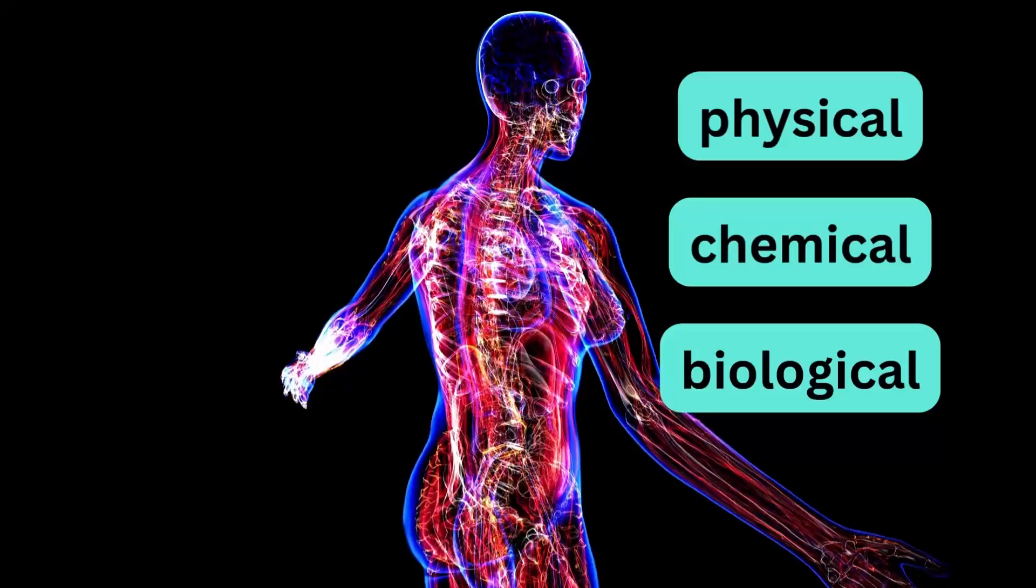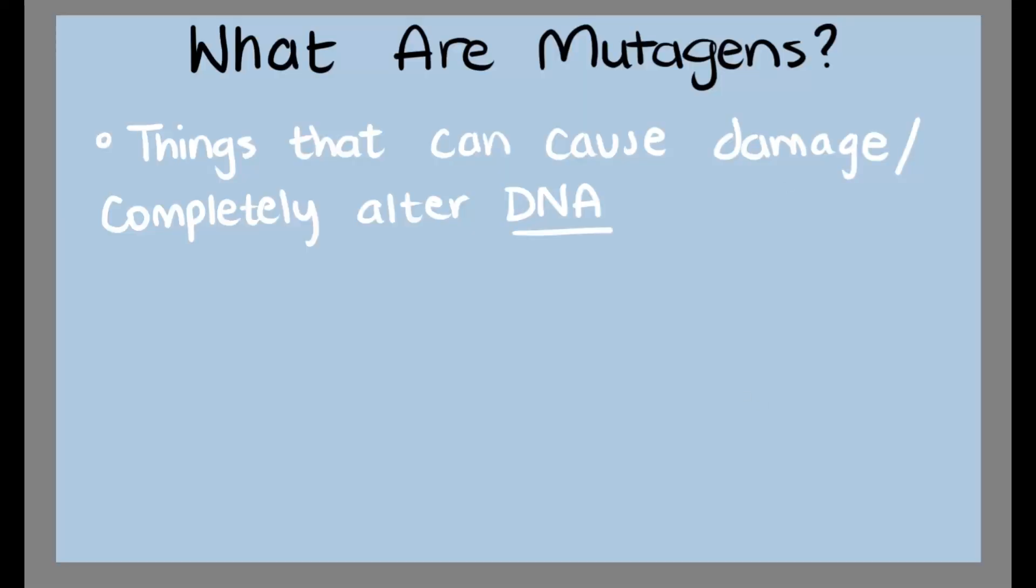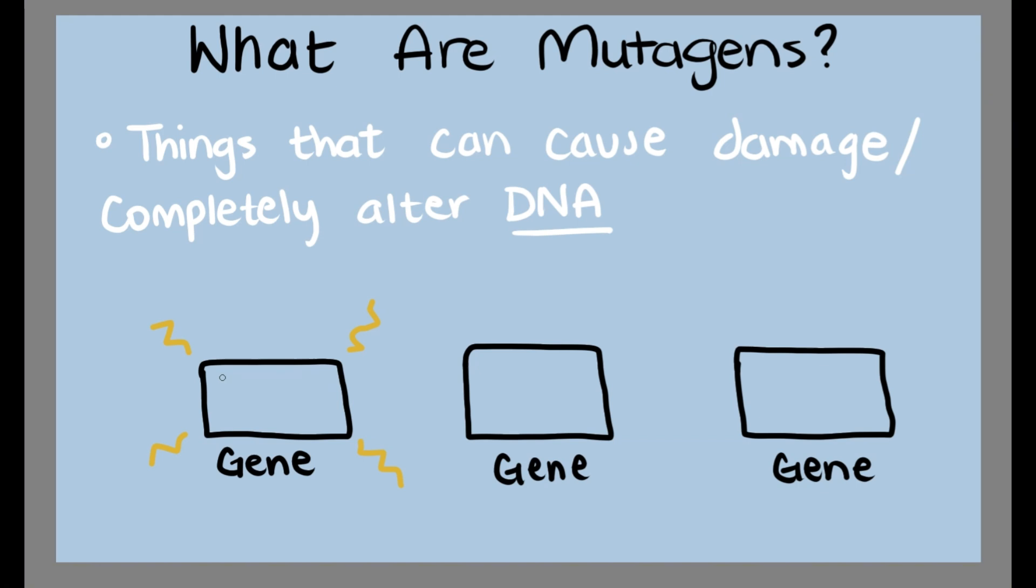No matter which of the three types, mutagens are things that can cause damage or completely alter parts of our genes. This can lead to overexpression or underexpression of genes. It can also lead to cancers.